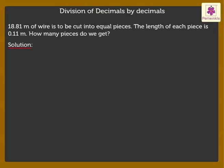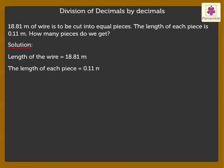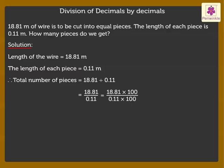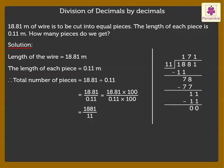Let's write the statements first. Length of the wire = 18.81 meters. The length of each piece = 0.11 meters. Therefore, total number of pieces = 18.81 ÷ 0.11. On simplification, we get 1881 ÷ 11, which is equal to 171. Thus, we get 171 pieces of the wire.